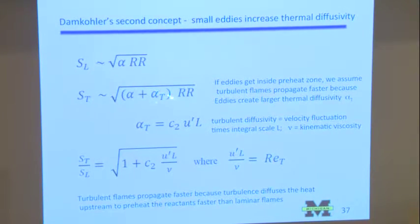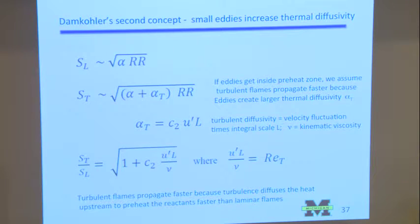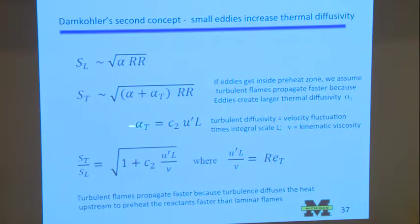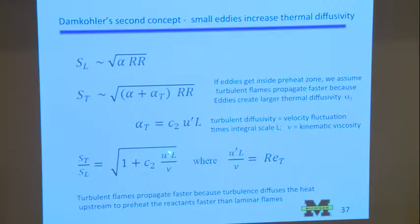What is the turbulent thermal diffusivity? The parcel-mixing argument from last time would indicate this diffusivity is U-prime times the integral scale — centimeters per second times centimeters. If you plug that in and take the ratio, you get a different formula for the turbulent burning velocity. It's a bit like the previous one but has the integral scale in it, and U-prime not squared. It says that turbulent flames propagate faster because there's more turbulence and because the integral scales are large. This is actually a Reynolds number. This formula isn't bad at high Reynolds number, while the other formula is pretty good at low Reynolds number — Damköhler was probably right on both cases but in different regimes.